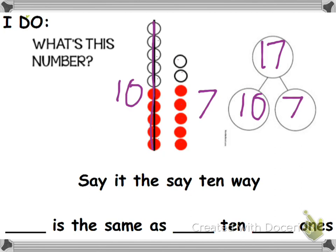You can say 1, 2, 3, 4, 5, 6, 7, 8, 9, 10, 11, 12, 13, 14, 15, 16, 17. Okay, there are 17. So now we have to do this the 10 way. It says blank is the same as blank tens and blank ones.